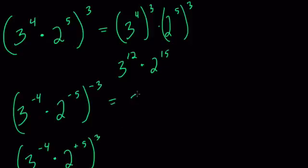So here in the first one, we would have 3 to the positive 12th, because a negative 4 times a negative 3 is a positive 12, and then 2 to the negative 5 to the negative 3rd is 2 to the positive 15th. So here nothing really changes.